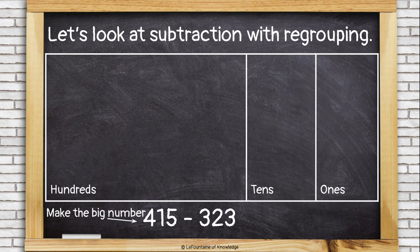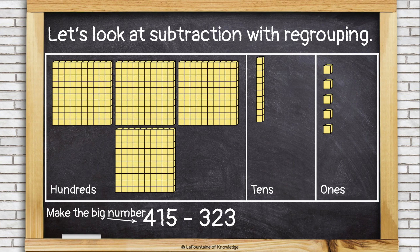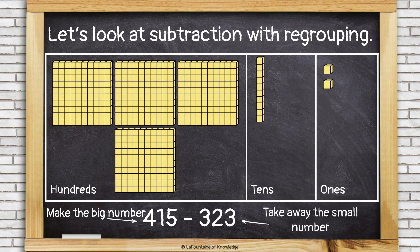Once again, start by making the big number. 5 ones, a 10, and 4 hundreds. That shows 415. And then I need to take away the smaller number, starting with the ones. Okay, I need to take away 3 ones. I can do that. Gone.